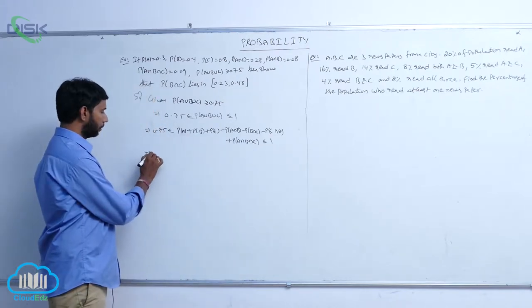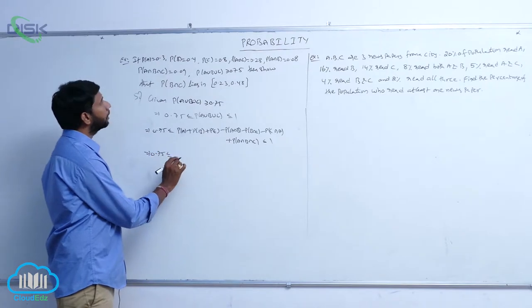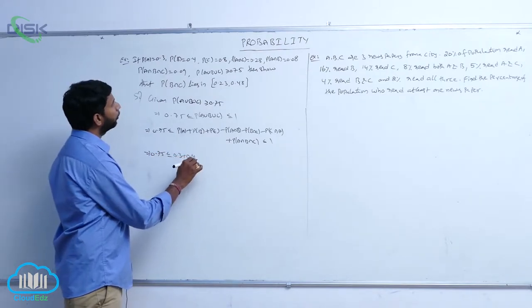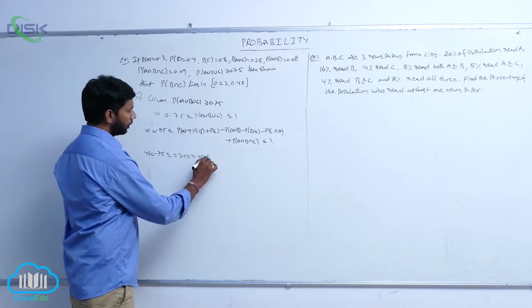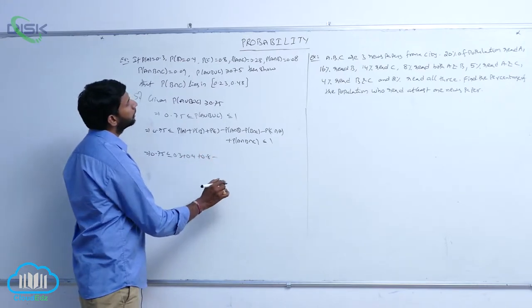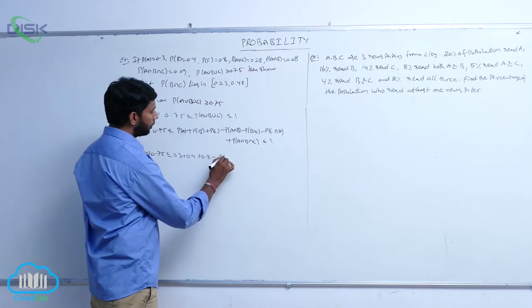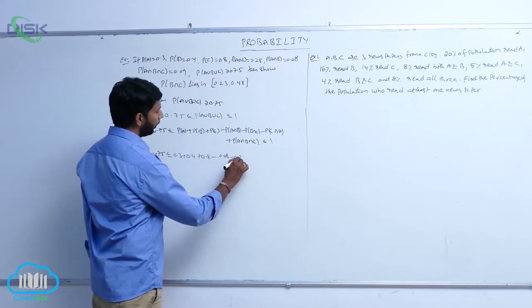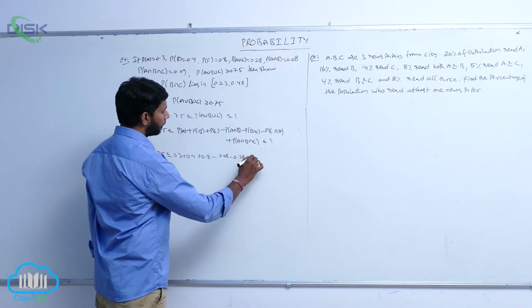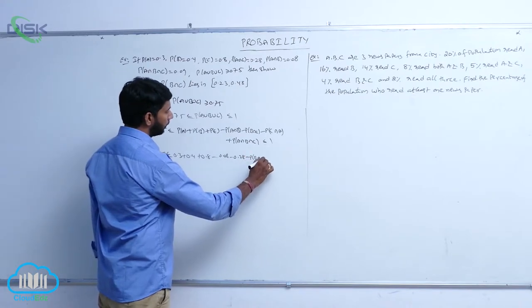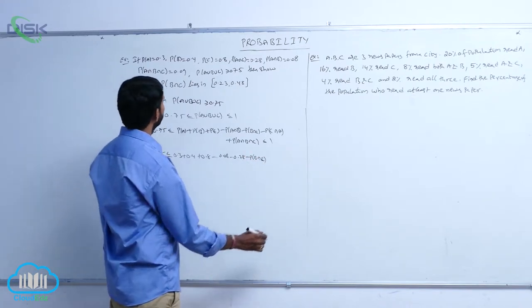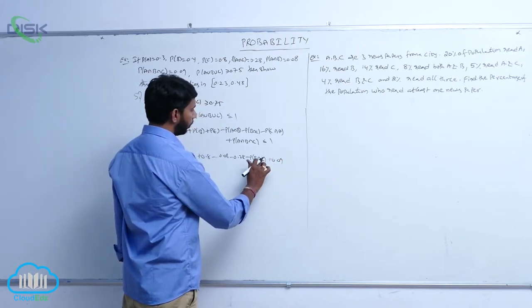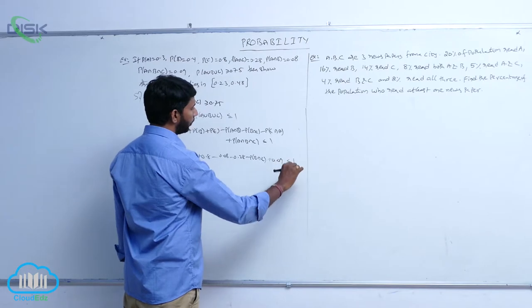Substituting all the values: 0.75 ≤ 0.3 + 0.4 + 0.8 − 0.08 − 0.28 − P(B∩C) + 0.09 ≤ 1.